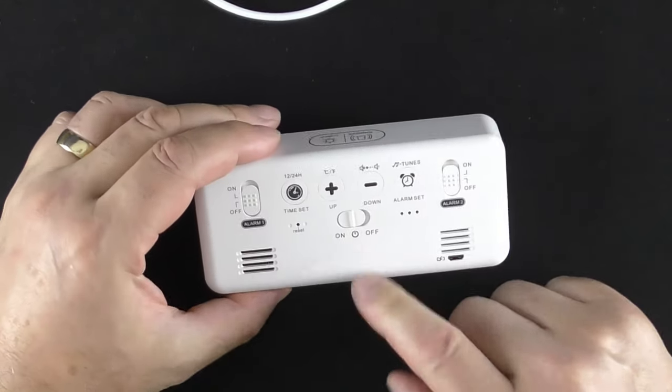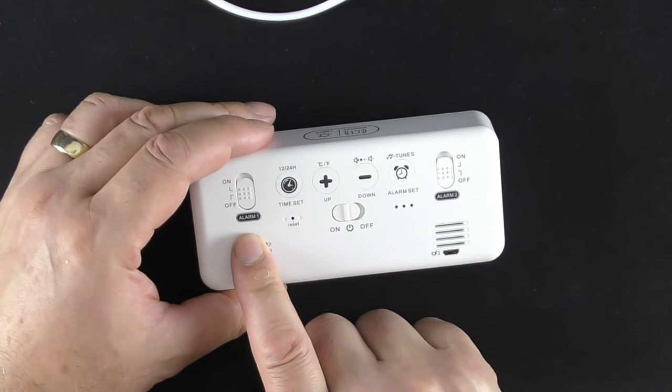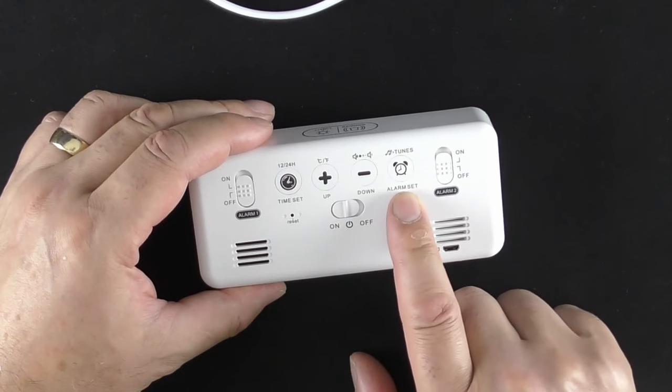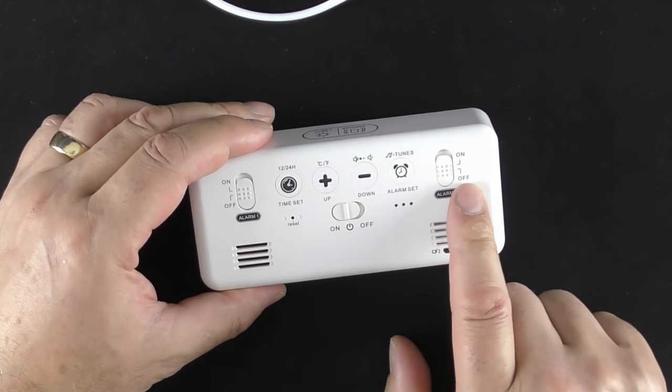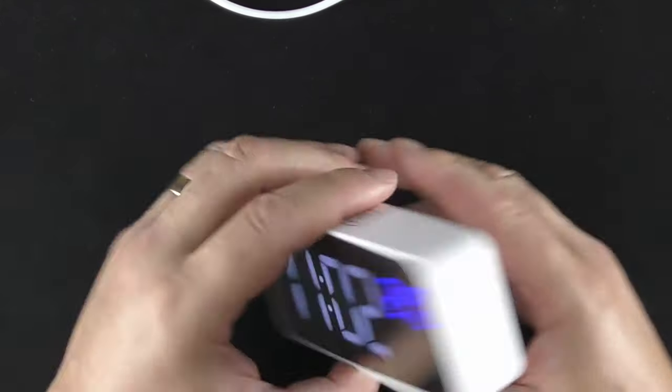And that's the same with adjusting the alarm. So if you want to set the alarm, basically hold that in for three seconds. And it will come up for alarm number one. And go through that. Once you've done that, it will go over to alarm number two. You set that. And job done.